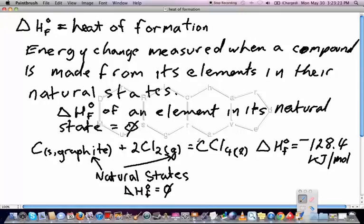When this is made from these elements, this amount of energy, 128.4 kilojoules per mole, is released. Usually, heats of formations are negative because these compounds are usually more stable in relation to the elements from which they are actually made.